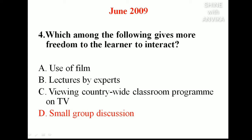Next question: which among the following gives more freedom to the learner to interact? Use of film does not give free interaction. Lecture by experts — students are hesitant to interact with experts, so that is not correct. Viewing a countrywide classroom program on TV also does not give free interaction. But in small group discussion, only six to eight participants are involved, so students can easily interact with others. The correct answer is small group discussion.